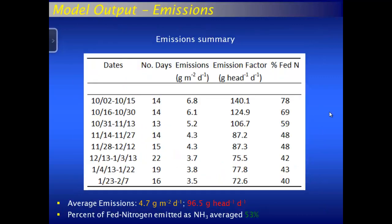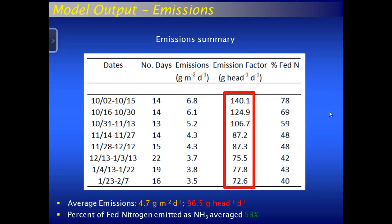This is a bottom-line summary showing all of our deployment periods — most were about two weeks, though during very cold periods we let it go an extra week. The average emissions were 4.7 grams per meter squared per day. This emissions factor is pretty close to some of the literature — a bit smaller, but still very good. We didn't know what we were going to get coming out of this, and it seems pretty good, especially for a first try.